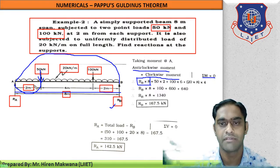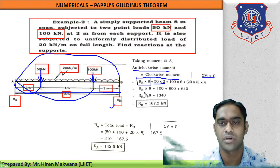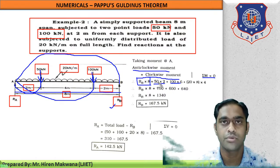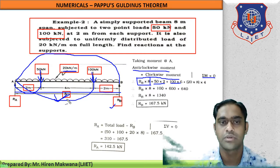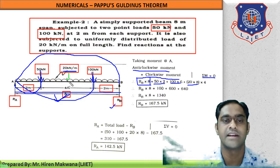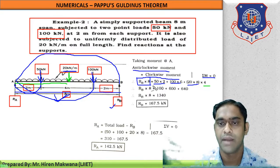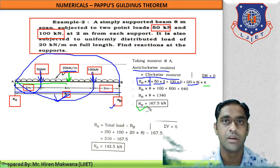For clockwise moments: 50 kN at 2 meters gives 50 × 2 = 100 kN·m clockwise. The 100 kN load at 6 meters from A gives 100 × 6 clockwise. For the UDL of 20 kN/m over 8 meters, first convert to a point load: 20 × 8 = 160 kN, acting at the center, which is 4 meters from A. Solving gives RB = 167.5 kN.